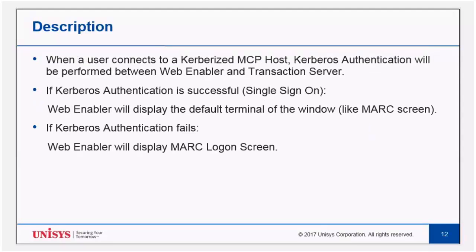When a user connects to an MCP host configured for Kerberos, the Kerberos authentication is performed between WebEnabler and the transaction server at MCP. If Kerberos authentication is successful, WebEnabler will display the home or default screen of the connected transaction server application. If Kerberos authentication fails, WebEnabler will display the mark logon screen.